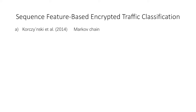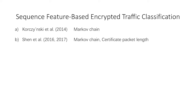Krusecki et al. first proposed using first-order Markov chains to generate a Markov model of message type sequences for each application and classify encrypted traffic. Then, Shen et al. proposed using second-order Markov chain fingerprints and certificate packet length.